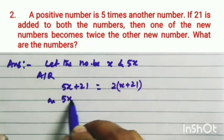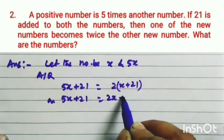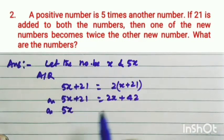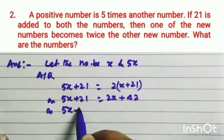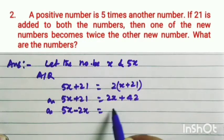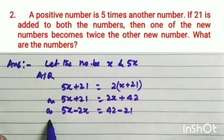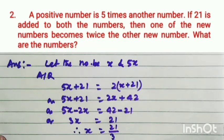So, 5x plus 21 equals 2 into (x plus 21), which gives 2x plus 42. And 5x, bringing 2x from the right-hand side to the left-hand side, becomes minus 2x, equal to 42 minus 21. Taking 21 to the right-hand side, 5x minus 2x gives 3x equal to 21. And 42 minus 21 equals 21.